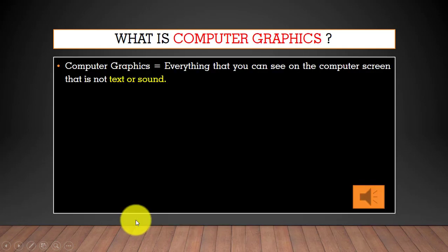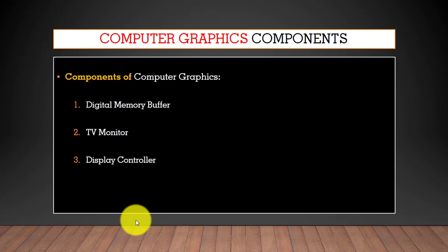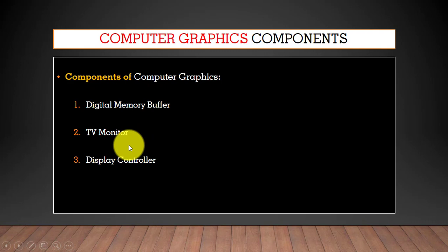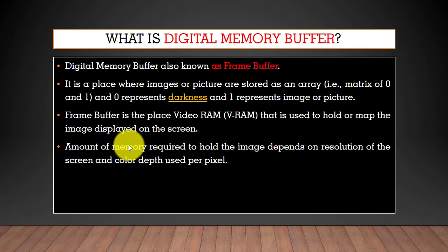In summary, computer graphics refers to everything you can see on the screen that is not text or sound. There are three main components of computer graphics: digital memory buffer, TV monitor, and display controller. Let's start with what is a digital memory buffer.